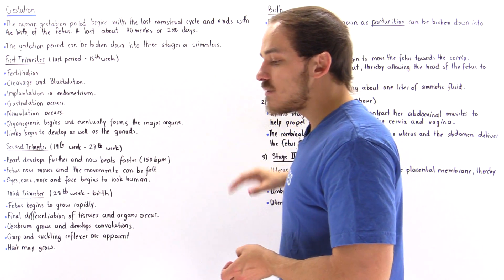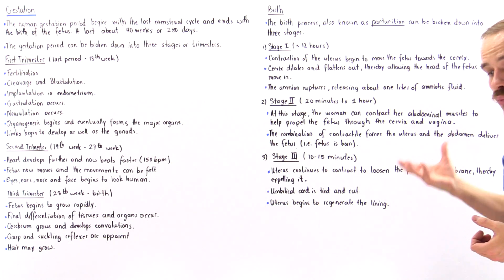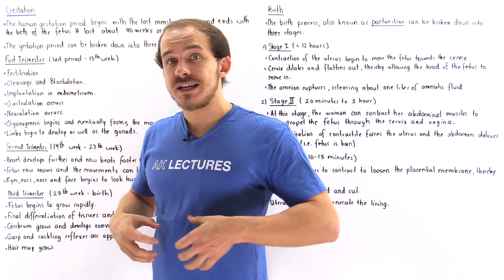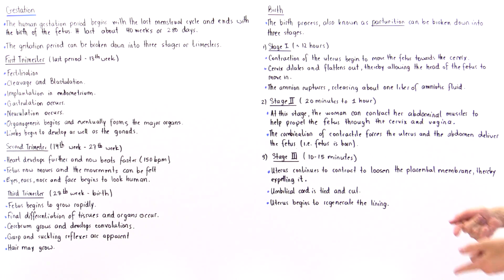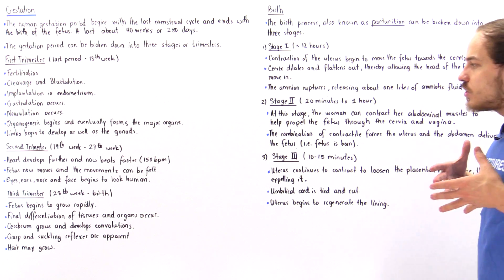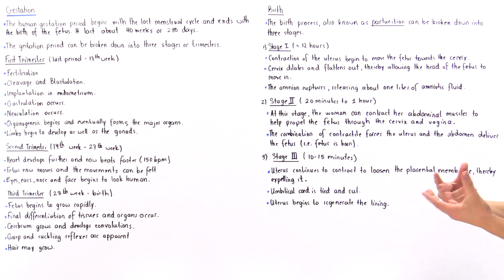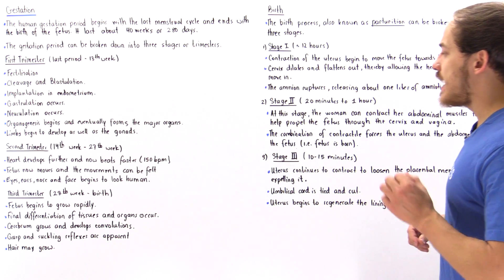Stage two is the actual birthing process and lasts from 20 minutes to one hour. This is when the woman actively pushes, contracting her abdominal muscles. Combined with the contraction of the uterine muscles, these two forces push the fetus through the cervix, through the vaginal cavity, and out to the outside environment. The fetus is then born, and at that point we refer to the newborn as a neonate.